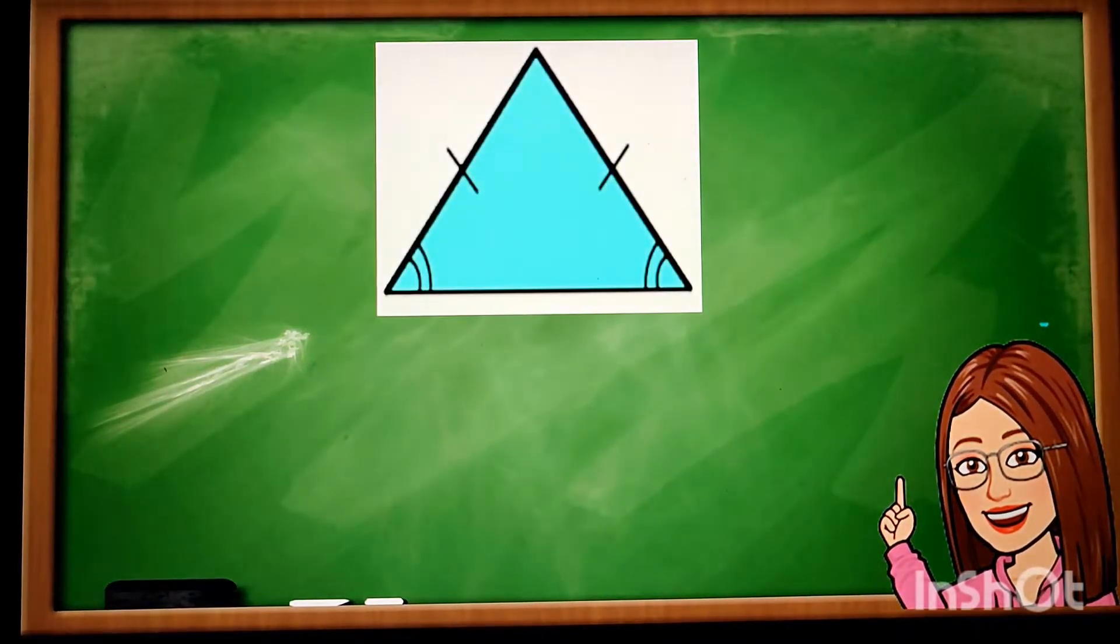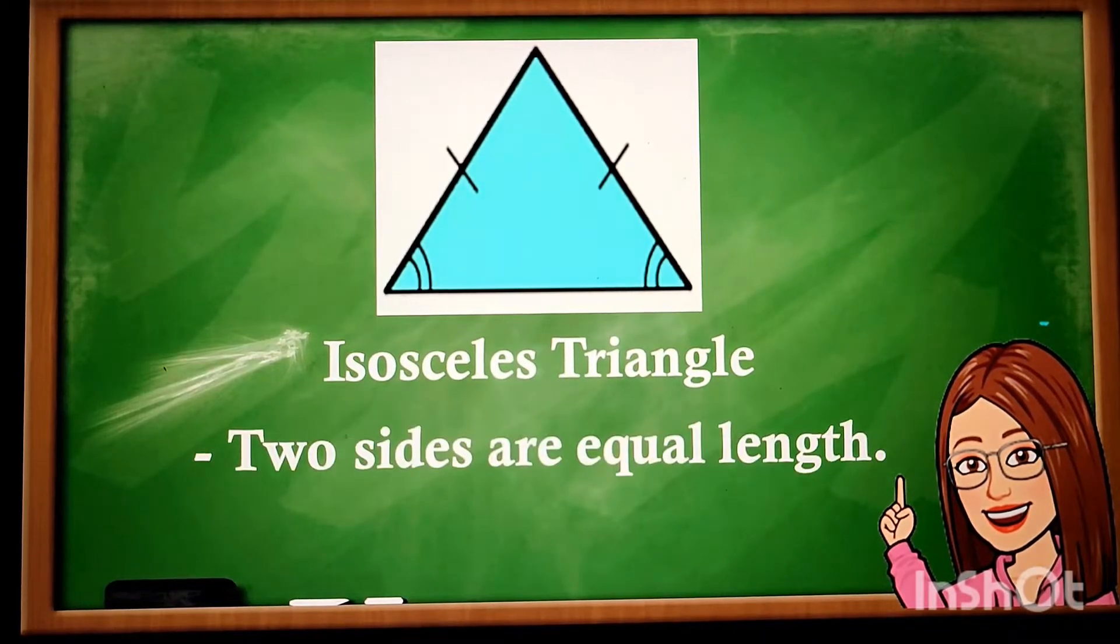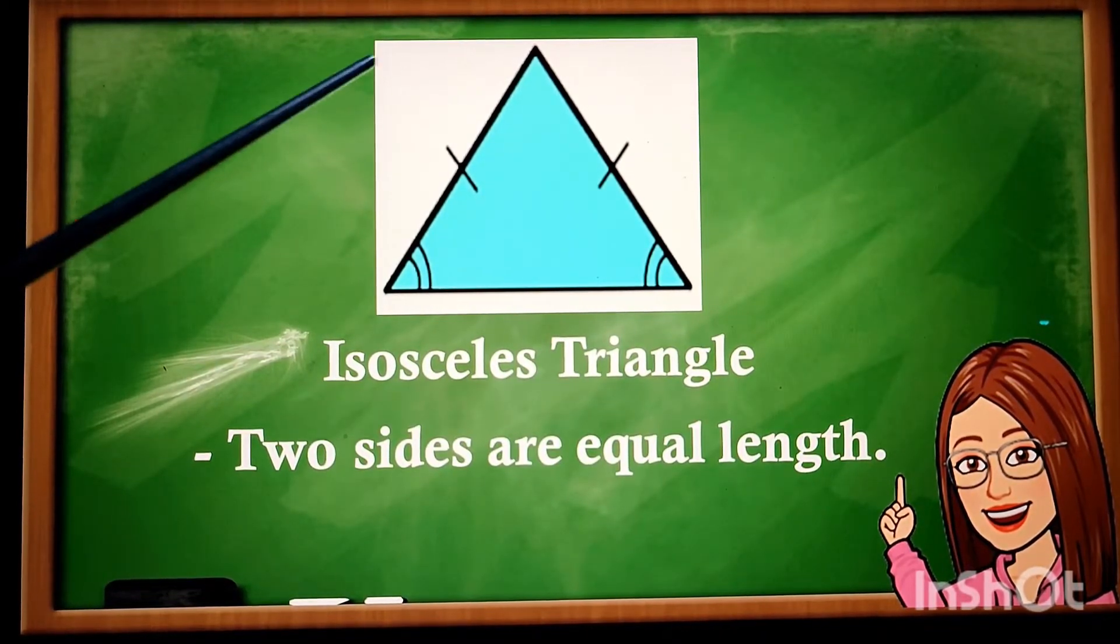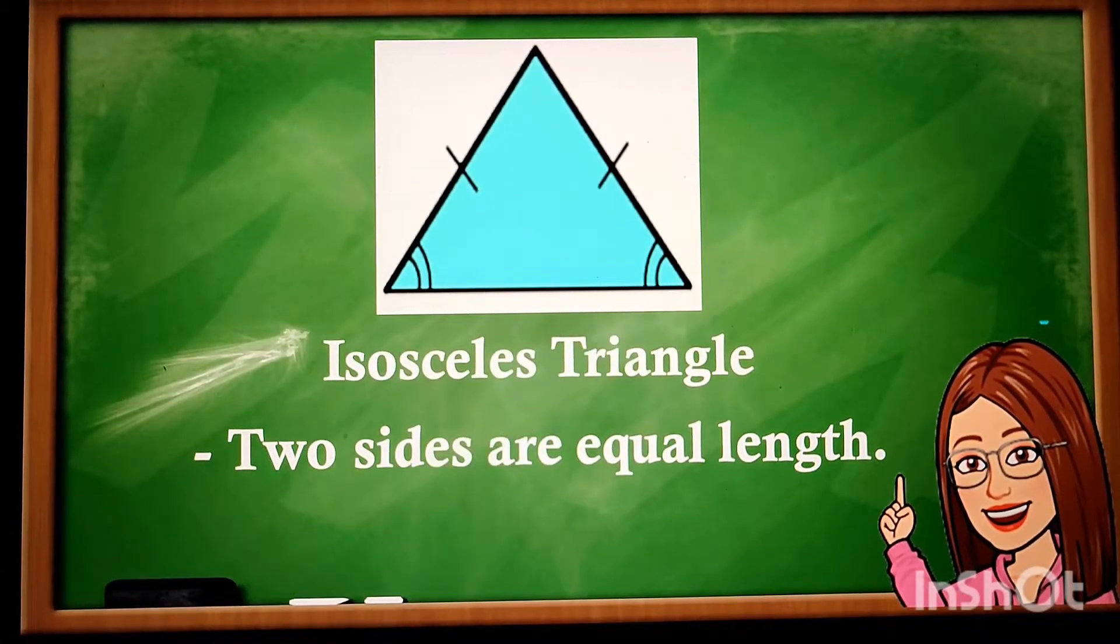Next we have isosceles triangle. Two sides are equal length. Only these two sides, 1 and 2, are the same length.